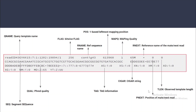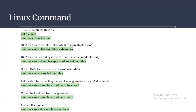Next we have RNEXT and PNEXT, which give the reference name and position of the mate read. When we have an asterisk in RNEXT it means the information is not available, and a zero in PNEXT also means the information is unavailable. The TLEN field is the observed template length — the length of the reference covered by the paired reads; a value of zero means it's not available because this is single-read information. Then we have the sequence of the read, followed by the quality score of the sequence.